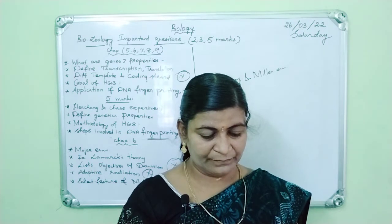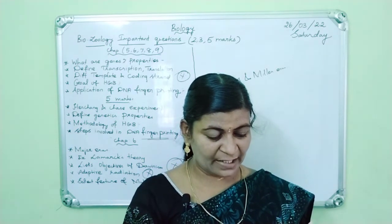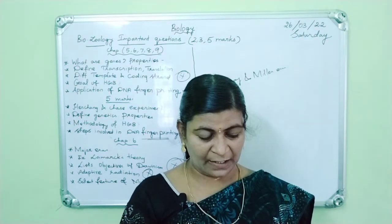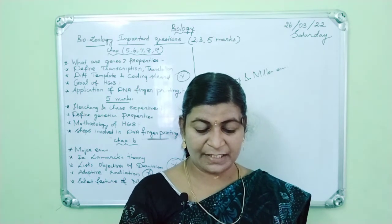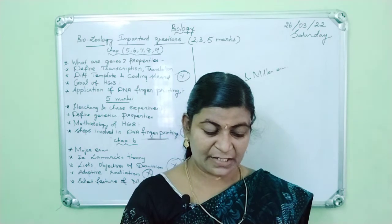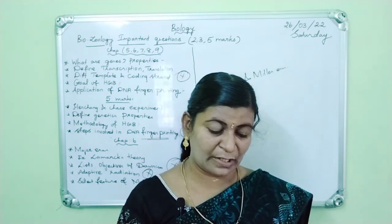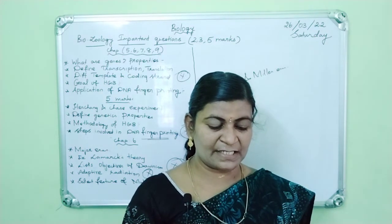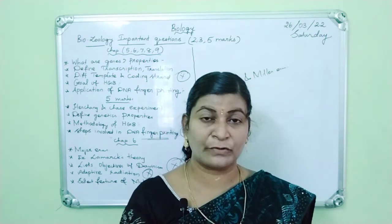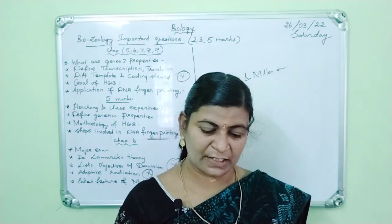For five marks in Chapter 8: human insulin production — draw and explain the flowchart. Explain gene therapy and the difference between somatic and germline gene therapy — it is an important question. What is PCR? Define stem cells. Application of PCR is a very important five mark question, including PCR in clinical diagnosis. Production of recombinant hepatitis B vaccine — explain with a flowchart. These are all the most important questions in biology.